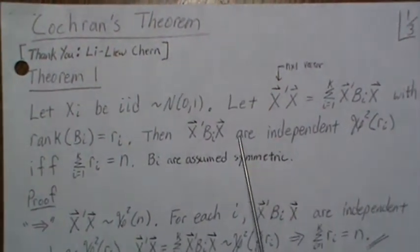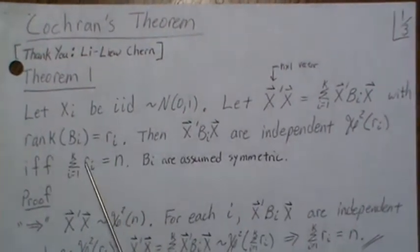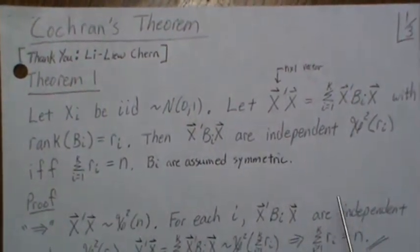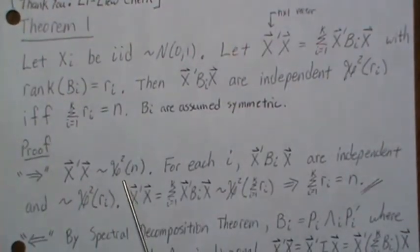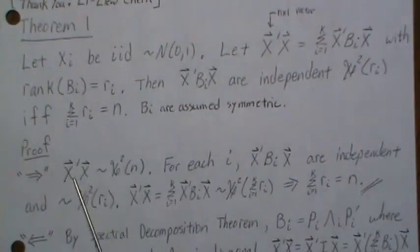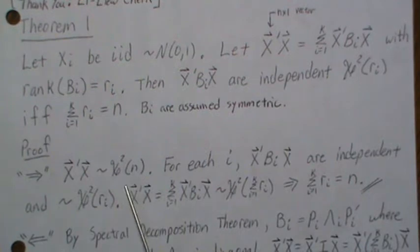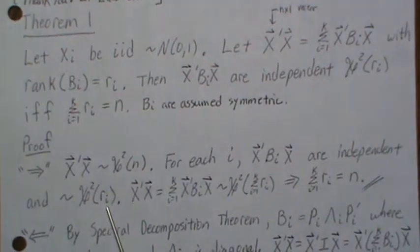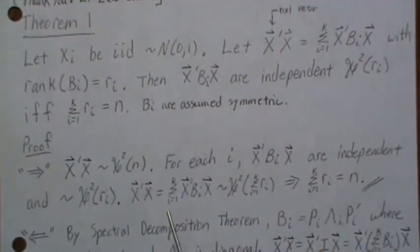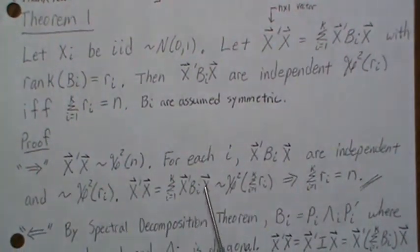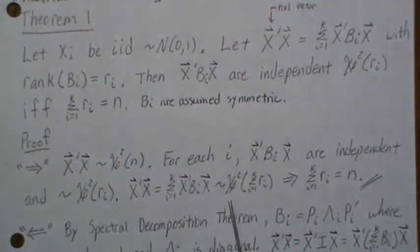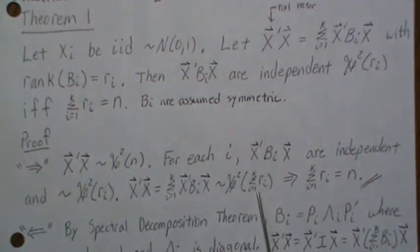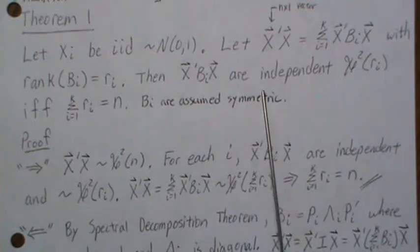The proof: we'll assume this is true and show that the sum of the ranks has to be n, then we'll assume the sum is n and prove independence. X'X is chi-squared(n) since the sum of squared standard normals is chi-squared(n). For each i, the quadratic forms are independent and chi-squared with Ri degrees of freedom — that's what we're assuming. Since these are independent chi-squared random variables, their sum is also chi-squared with degrees of freedom summed. But we know this is n, so the sum of ranks has to be n, and that proves it one way.